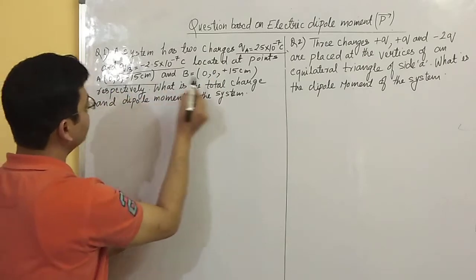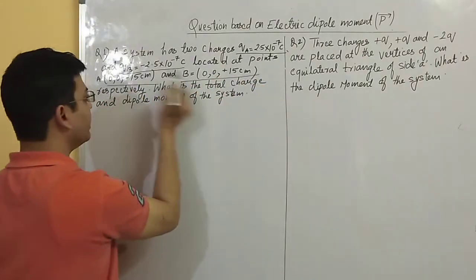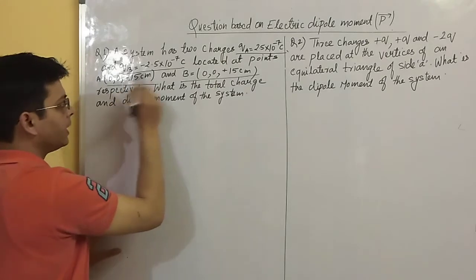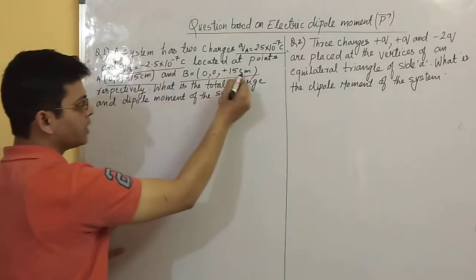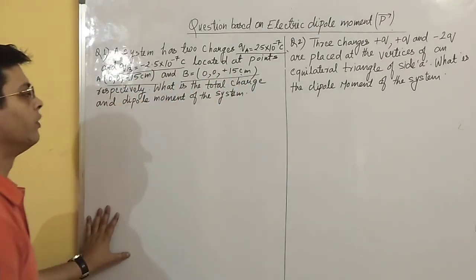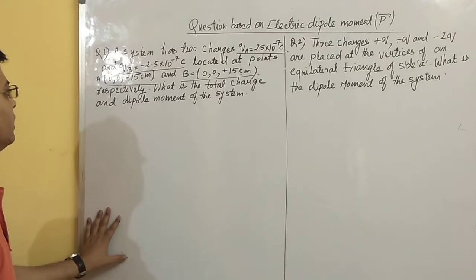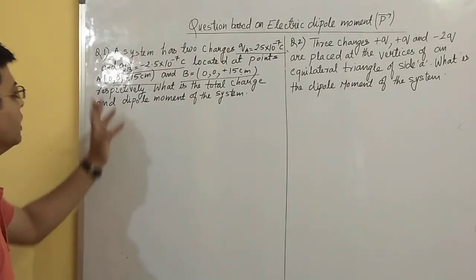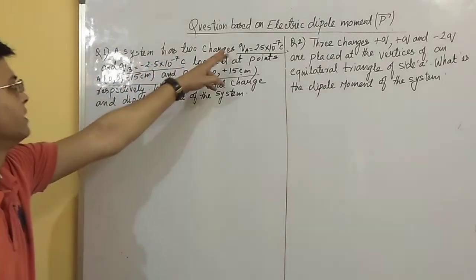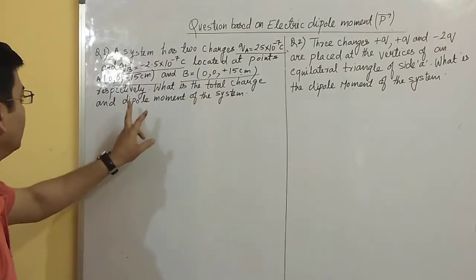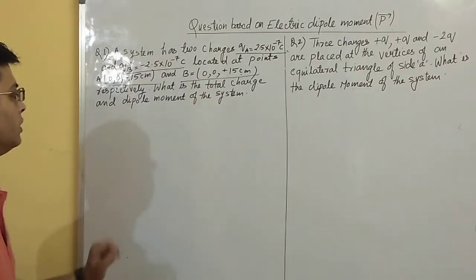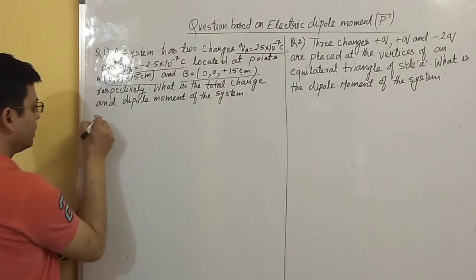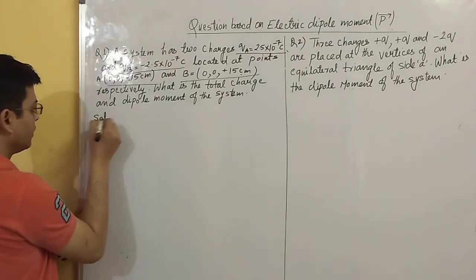The charges are located at specific coordinate points. The negative charge is at one coordinate and the positive charge is located at the positive coordinate. We need to find: what is the total charge on the system and what is the dipole moment? Let's see the solution.